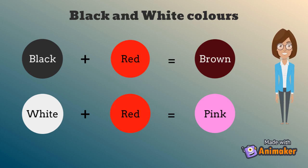When red color is mixed with black color, it forms brown color. When red color is mixed with white color, it forms pink color. This means when any color is mixed with black color, it forms darker shade of that color. But when any color is mixed with white color, it forms lighter shade of that color.